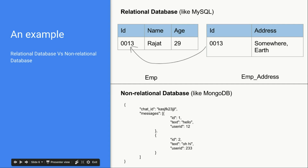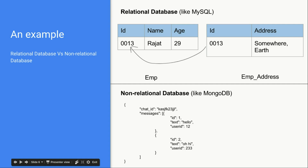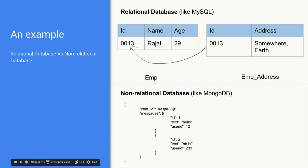So if we want to get the address of Rajat, we are going to apply a JOIN, because these tables are connected using a similar entity — in our case, the ID. We first find the ID, which is the primary key, then go to the address table and find that same ID, take the address, and return it to the user, because that address corresponds to Rajat. That is how relational databases operate.